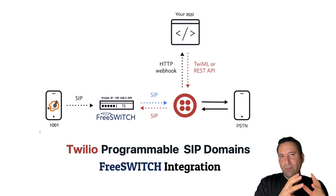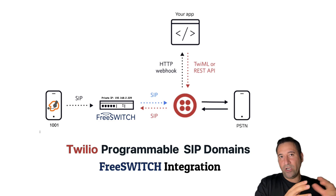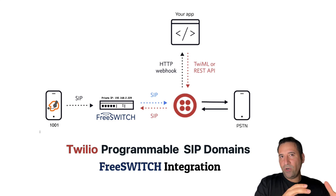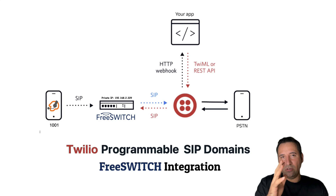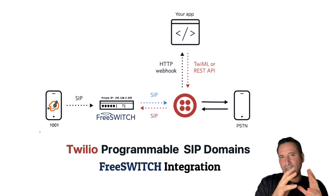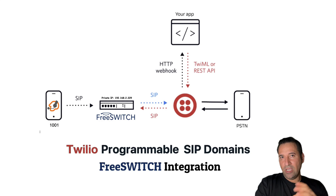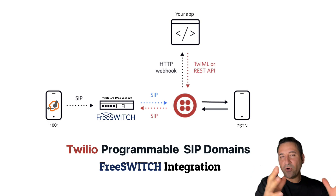But sometimes we need more than a basic call integration with Twilio. For example, you might want to integrate your FreeSwitch or Asterisk system with Twilio to use Twilio AI capabilities — for example, for creating a live transcript or translation system of the calls.